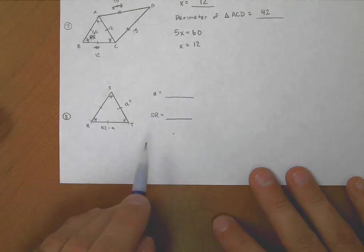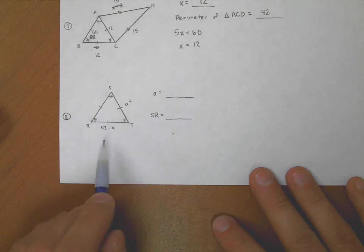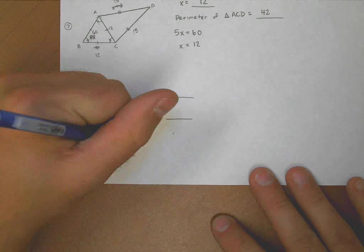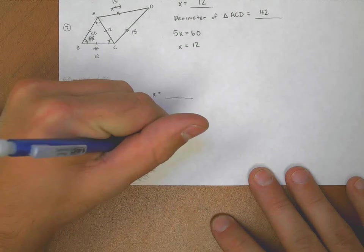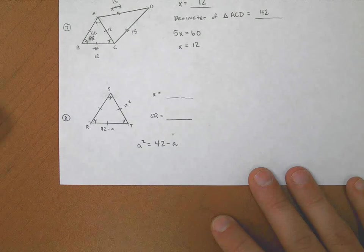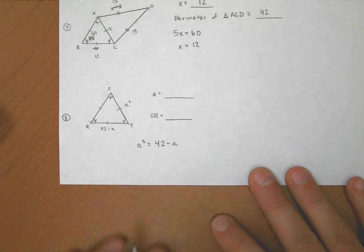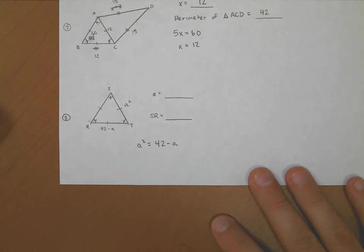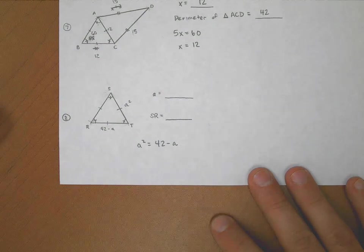So if I'm going to solve for a, I don't really have much to go off of other than a squared is the same thing as 42 minus a. a squared is the same thing as 42 minus a. And that is a quadratic problem. An a squared, an x squared problem. We solve all of these the same way.